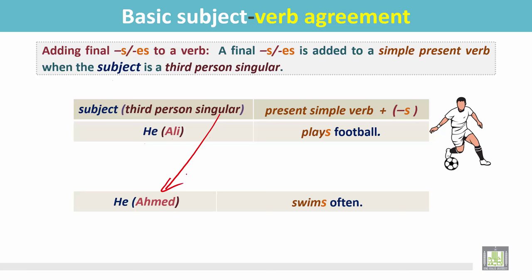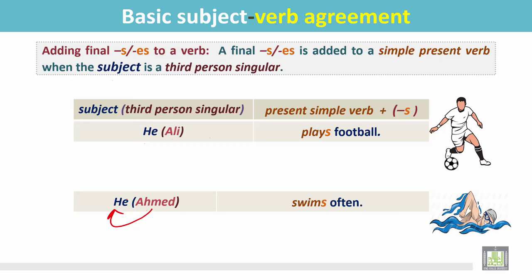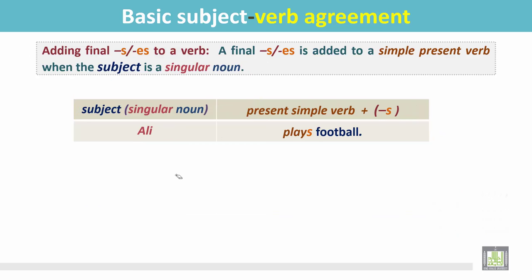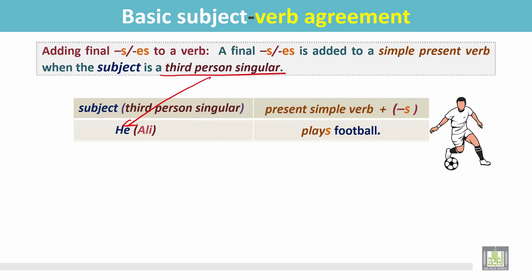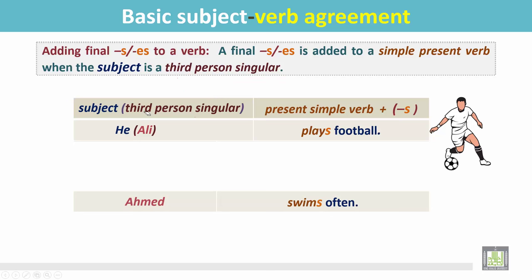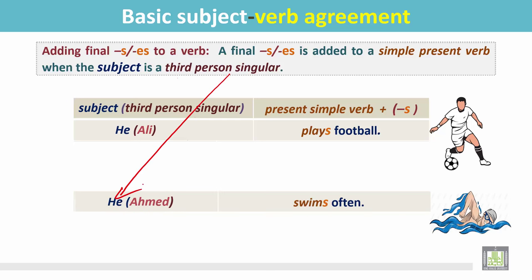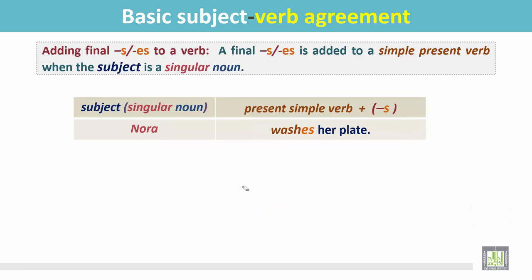The singular noun Ahmed is changed to the singular pronoun 'he' — he swims often. Since Ali is a singular noun, we change it to a third person singular pronoun and write 'he' instead of Ali: he plays football. There is no change in the verb. Ahmed swims often becomes he swims often.